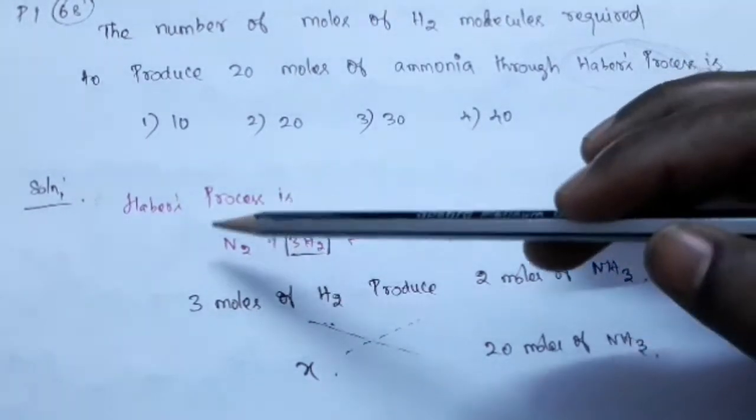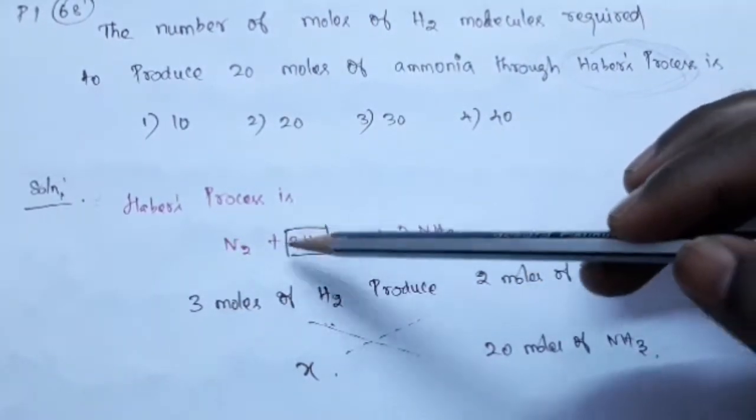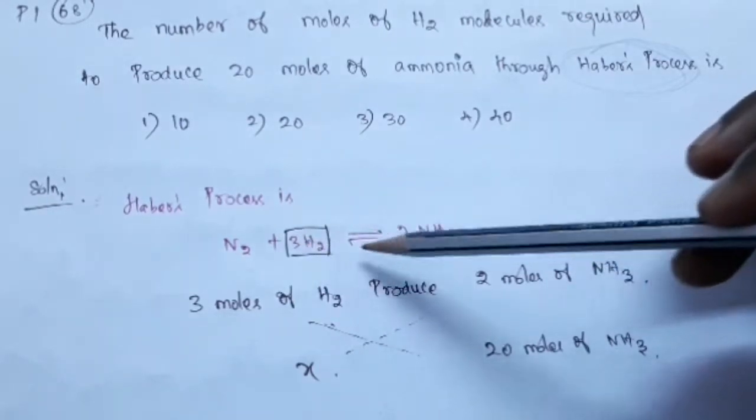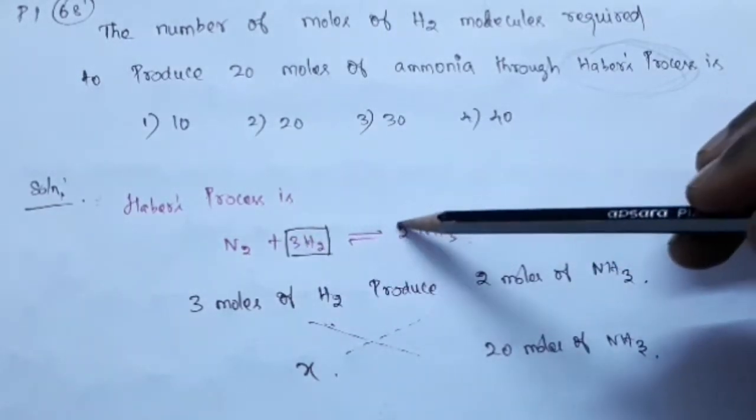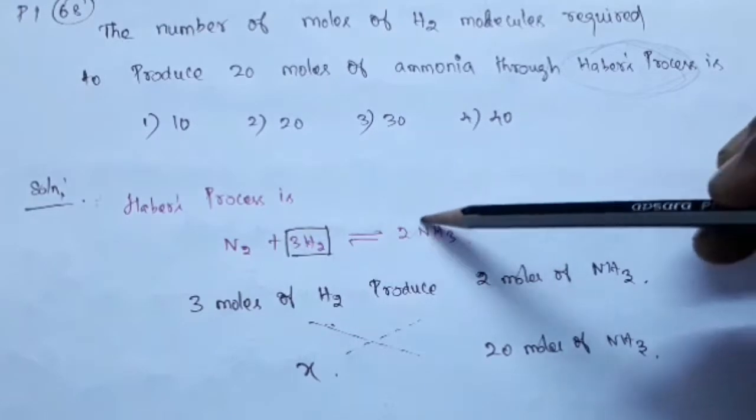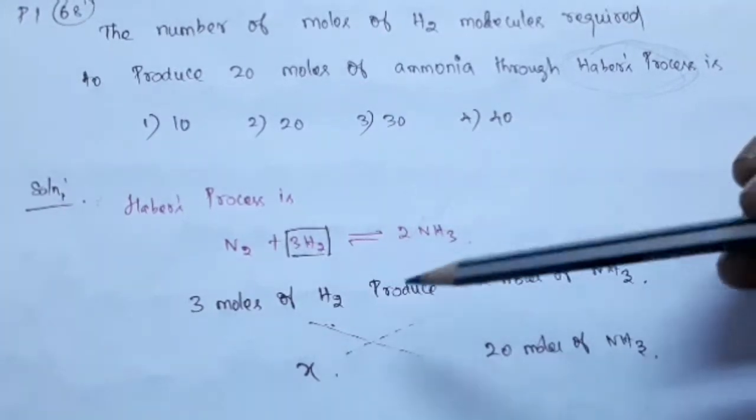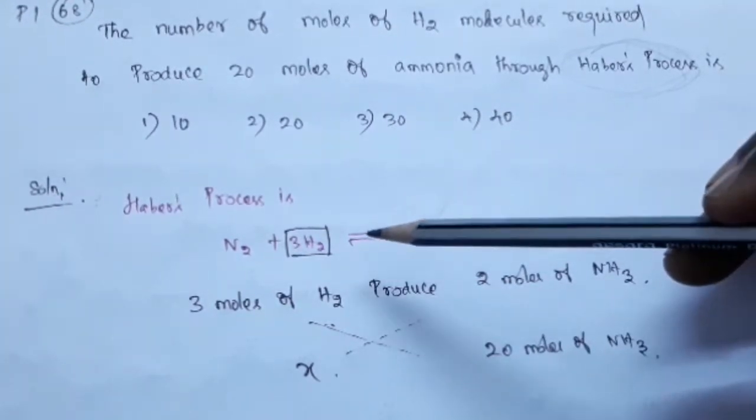1 mole of nitrogen reacts with 3 moles of hydrogen to form 2 moles of ammonia. It gives 2 moles of ammonia. It is a reversible process.